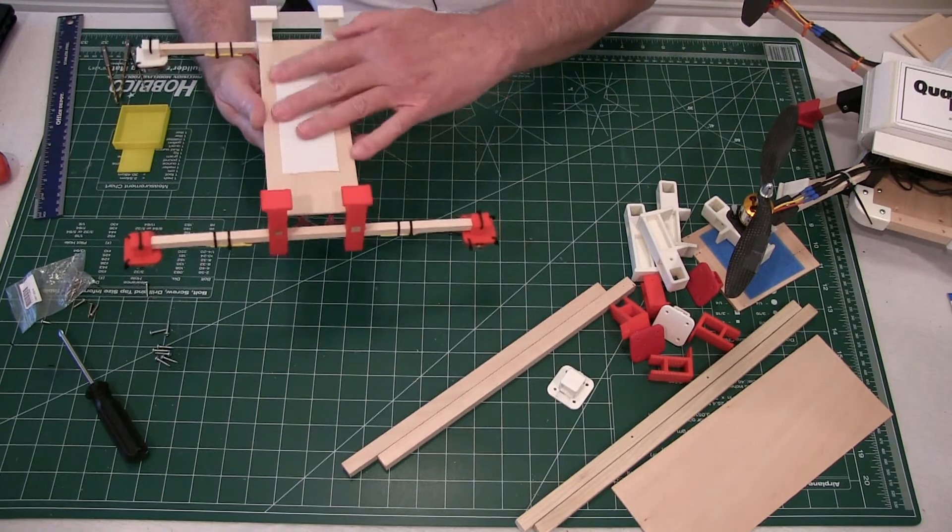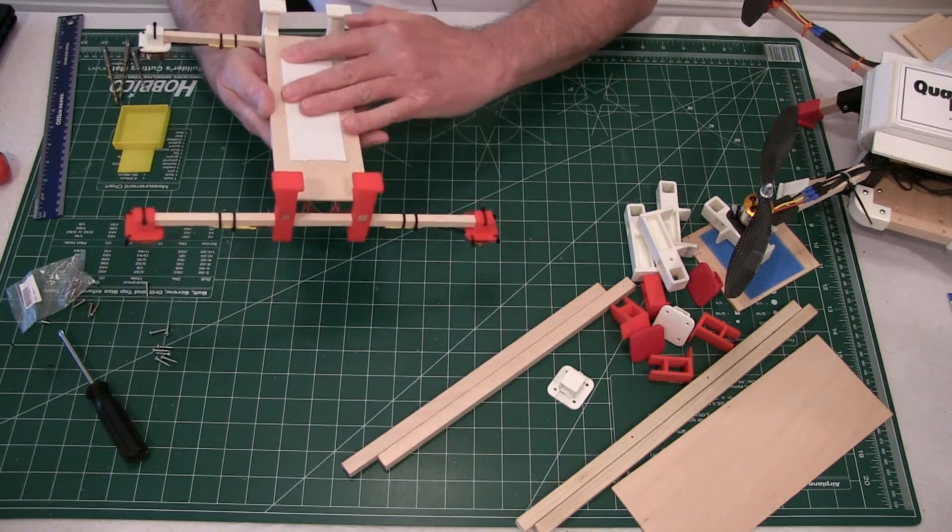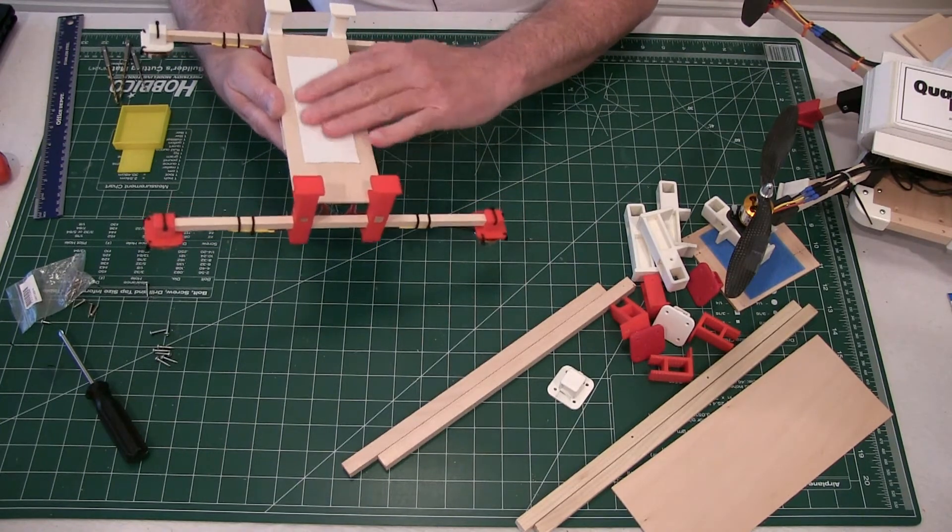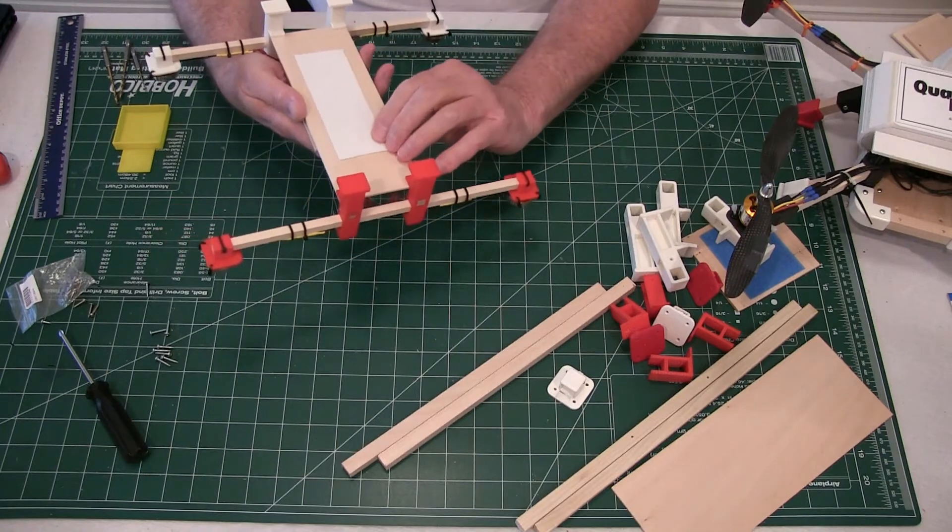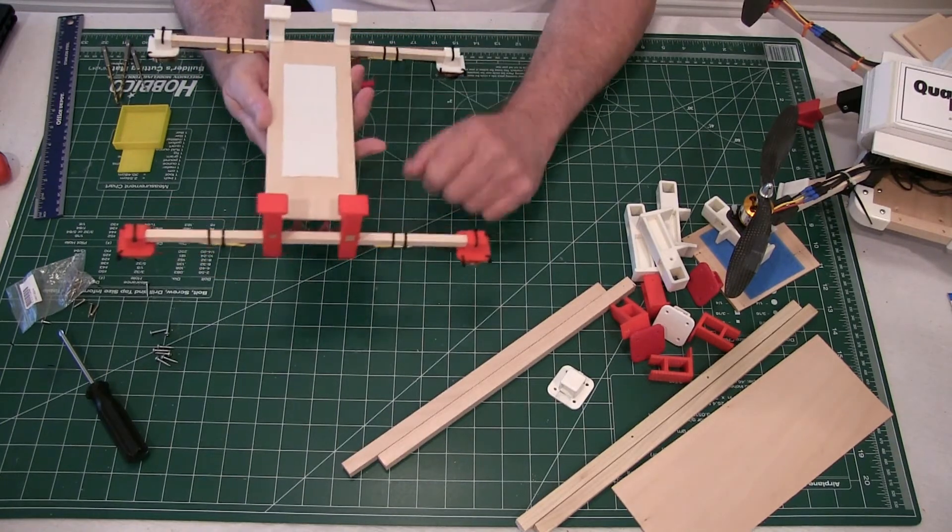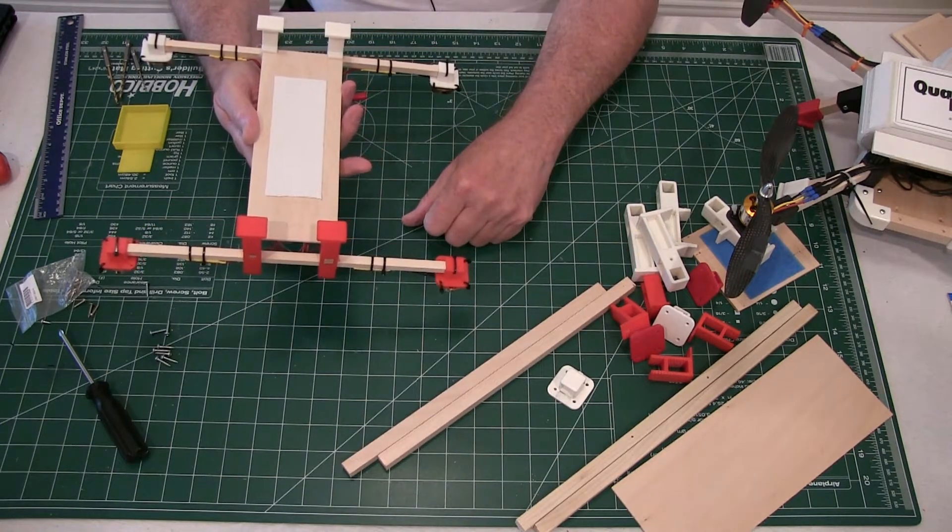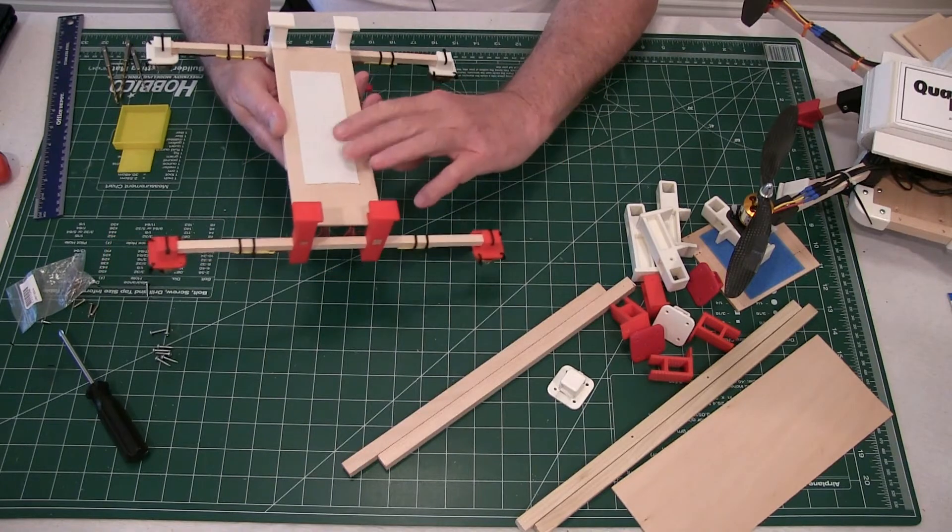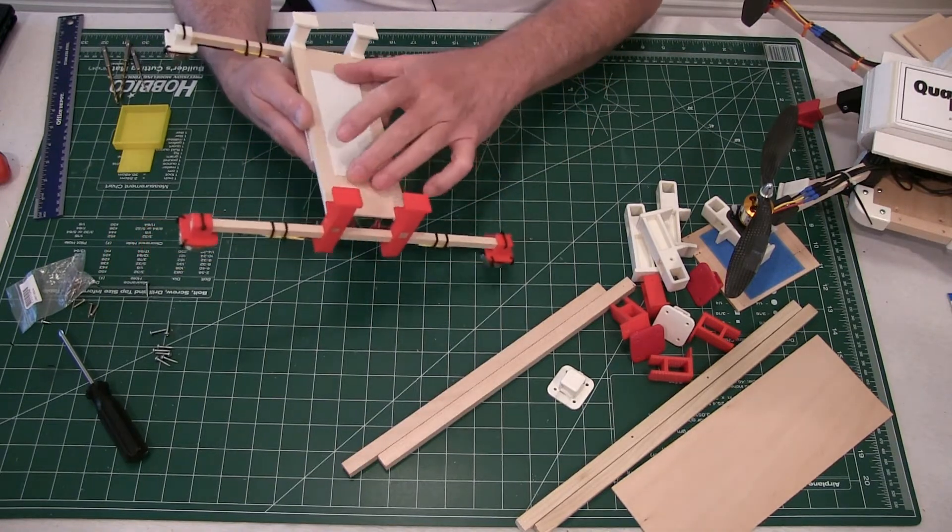The only thing we're doing for the battery mount on this is putting a piece of velcro at the bottom and we're just sticking the battery on. We're running two cell batteries. Plenty of strength to hold it on and this allows you to move it around if you want to.